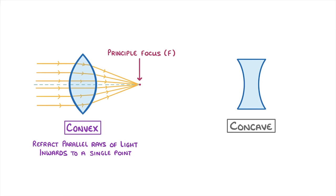Another name for a convex lens is a converging lens because they cause the light rays to converge, which just means to come together.